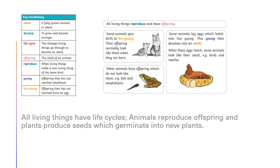Key vocabulary for life cycles. Adult: a fully grown animal or plant. To develop: to grow and become stronger. Life cycle: the changes living things go through to become an adult. Offspring: the children or child of an animal. To reproduce is when living things make a new living thing of the same kind. Young: offspring that has not yet reached adulthood. Live young: offspring that has not hatched from an egg.